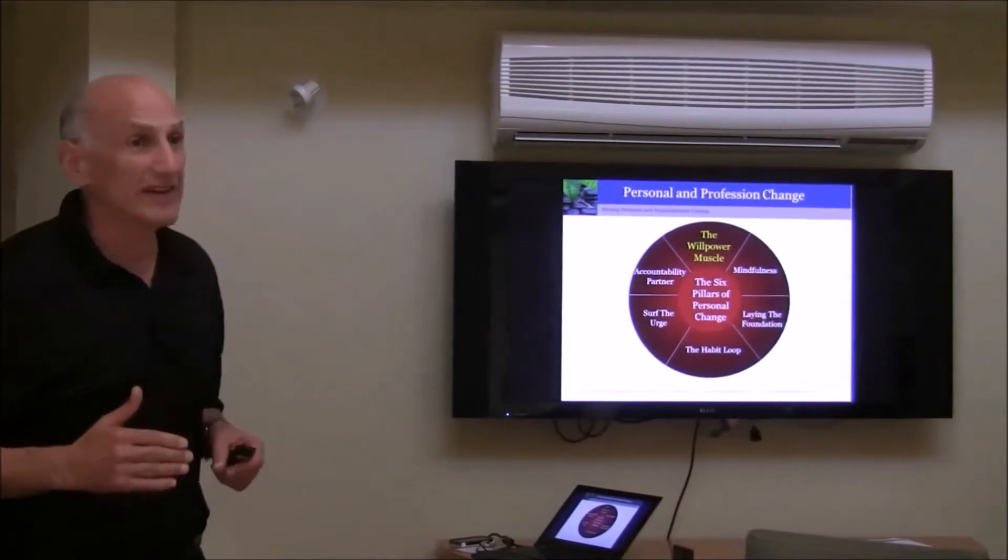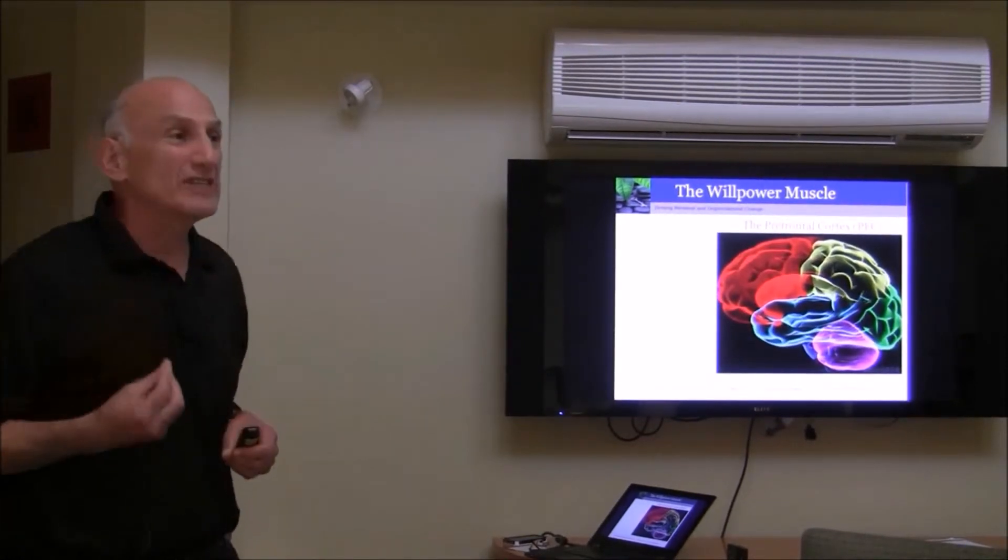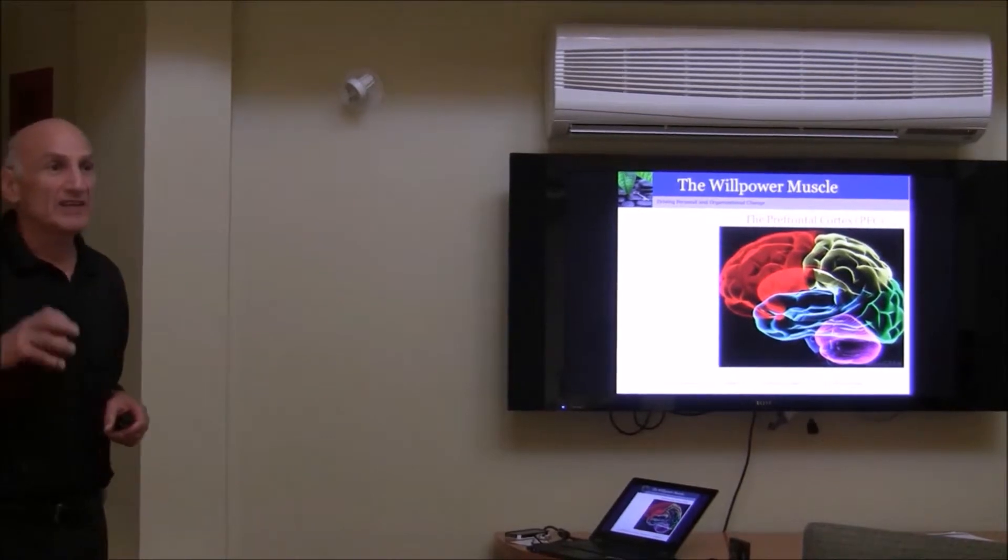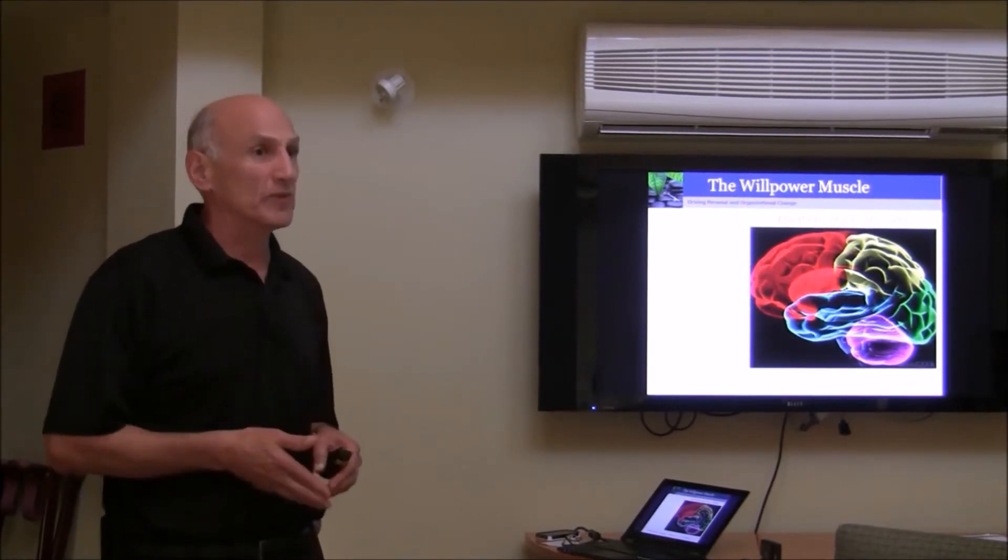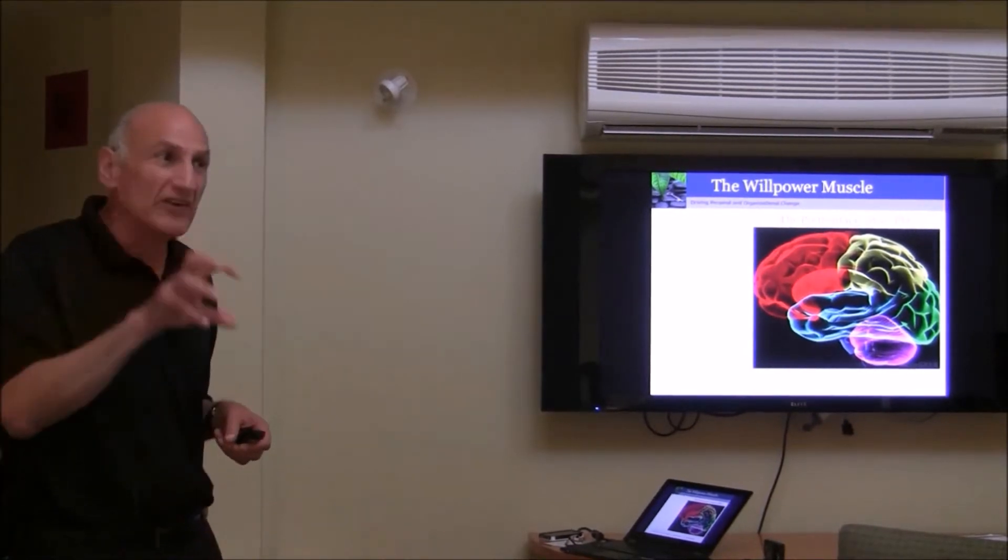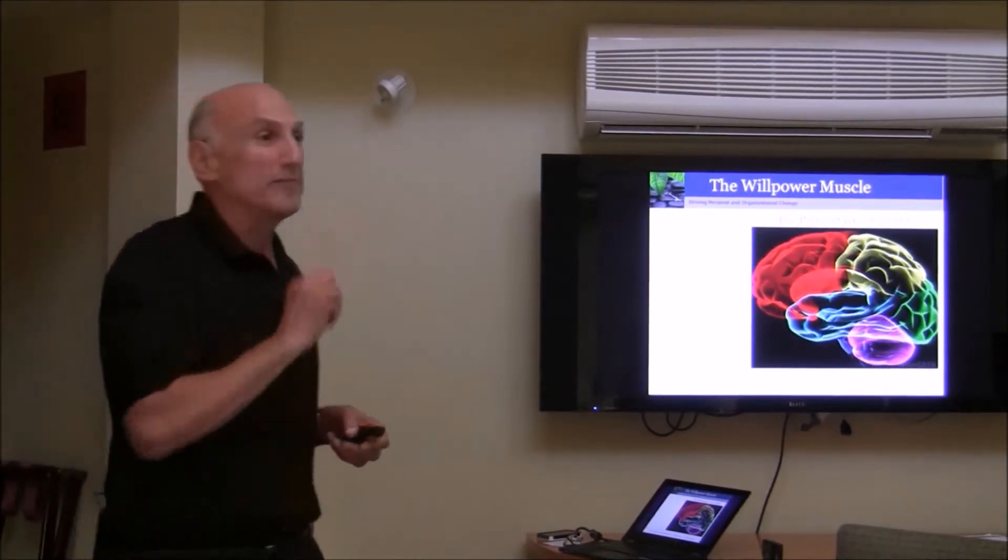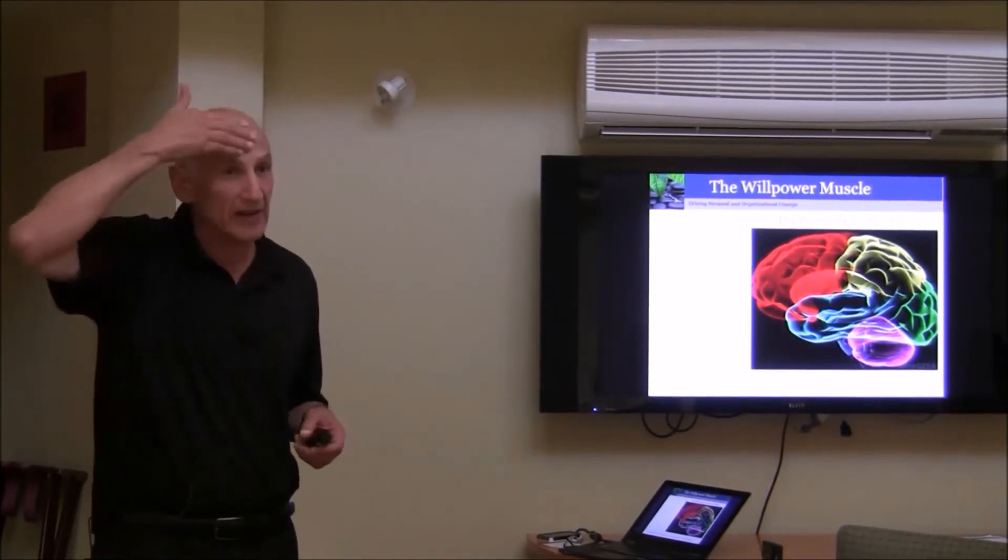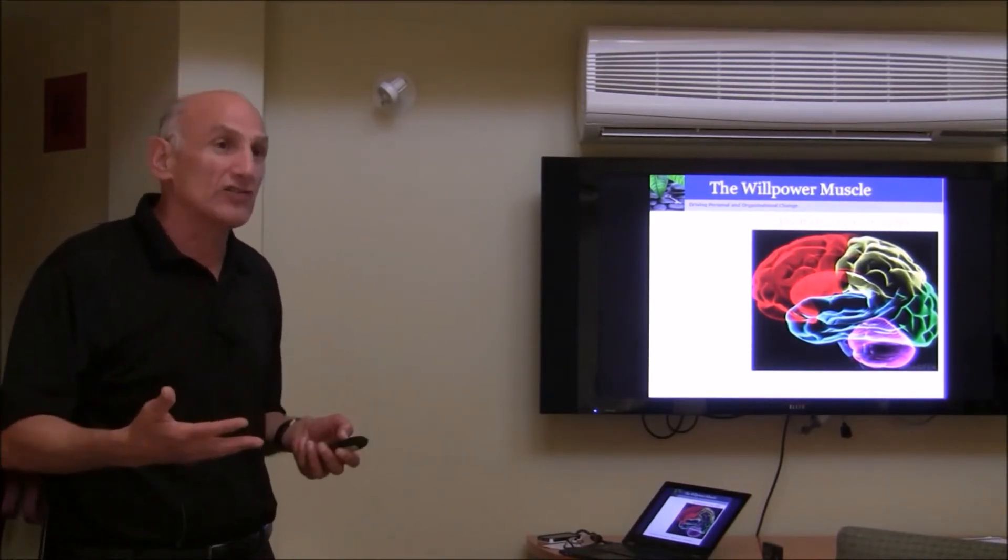So what is willpower and where does it sit inside our brain? Scientists with the advent of imaging, fMRI, magnetic resonant imaging, were able to identify the area in the brain where willpower actually sits. And that is what neurologists call the prefrontal cortex, the area right in front of our brains, right here. And that area is responsible for the key executive functions of our brain.